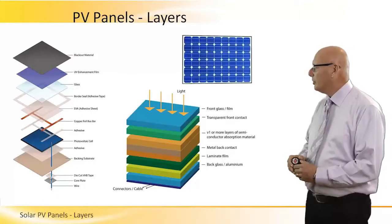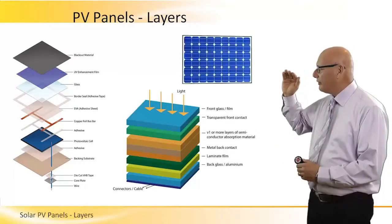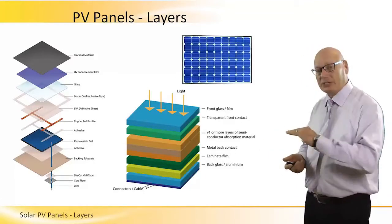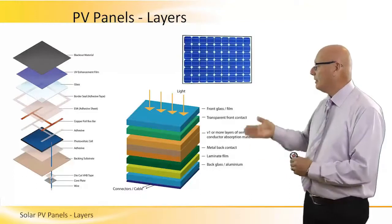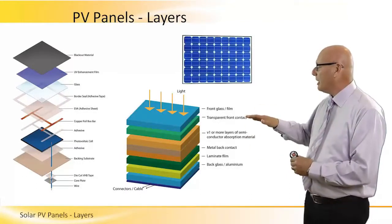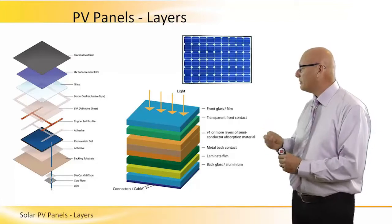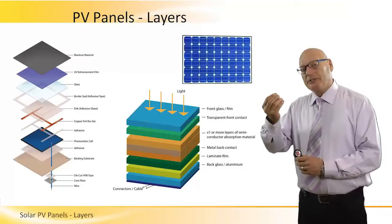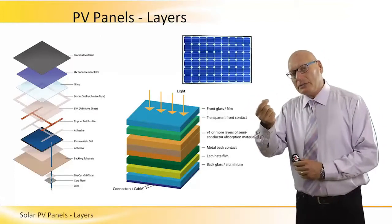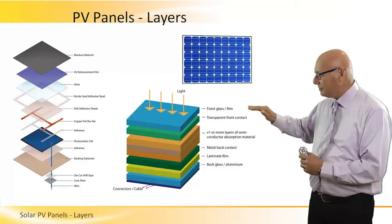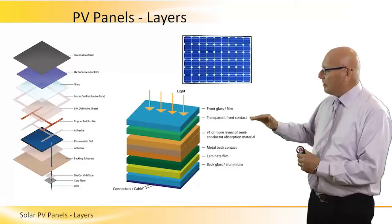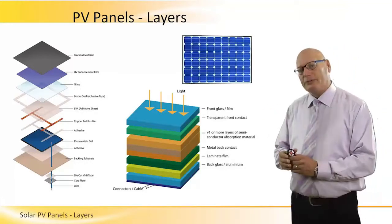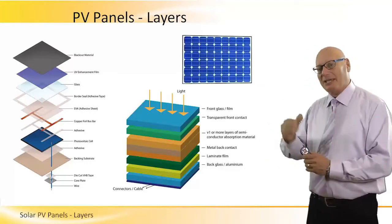Light comes from the top, goes to a thin front glass, which is basically just protection glass, should be very transparent. The green area underneath, the green layer, is transparent front contact. It's basically the electrical conductors laid in there in the green. Below the green we see several brownish kind of layers and they are the semiconductor layers, the N and the P.